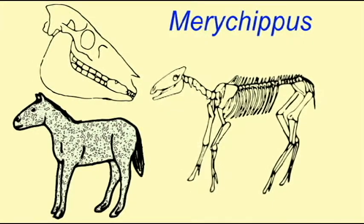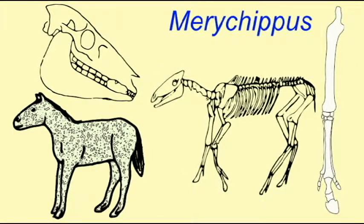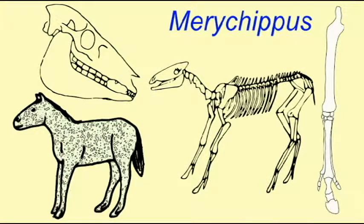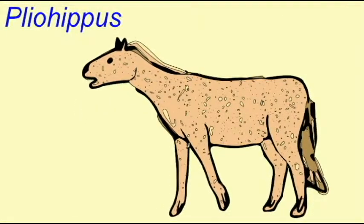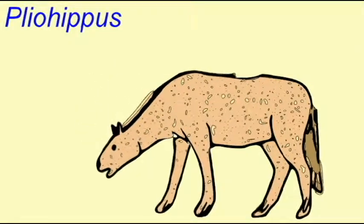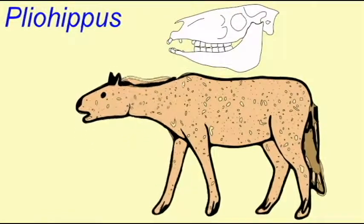Many lineages gradually increased in size, gradually modified their teeth so they were more efficient at eating grass as the grasslands spread throughout the world. And it was only in the past four million years or so that one-toed horses of the genus Equus evolved.